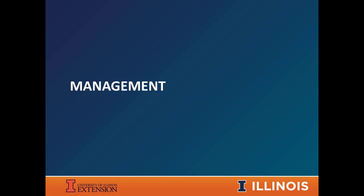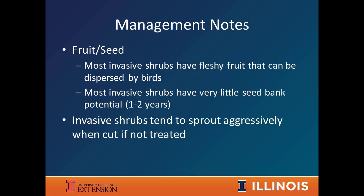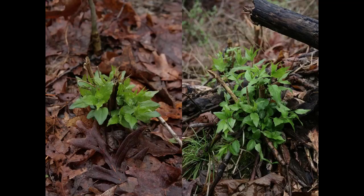When thinking about management, most of these invasive shrubs have bird-dispersed seeds, so they'll move around whether you clean your equipment or not — birds will bring them in from adjacent sites. The good news is most have very little seed bank ability, with seeds typically living only one to two years in the soil, so if you can halt seed production, the seed bank goes away quickly. However, all of these will sprout aggressively if you just cut them without treating them, so straight cutting alone is not enough.